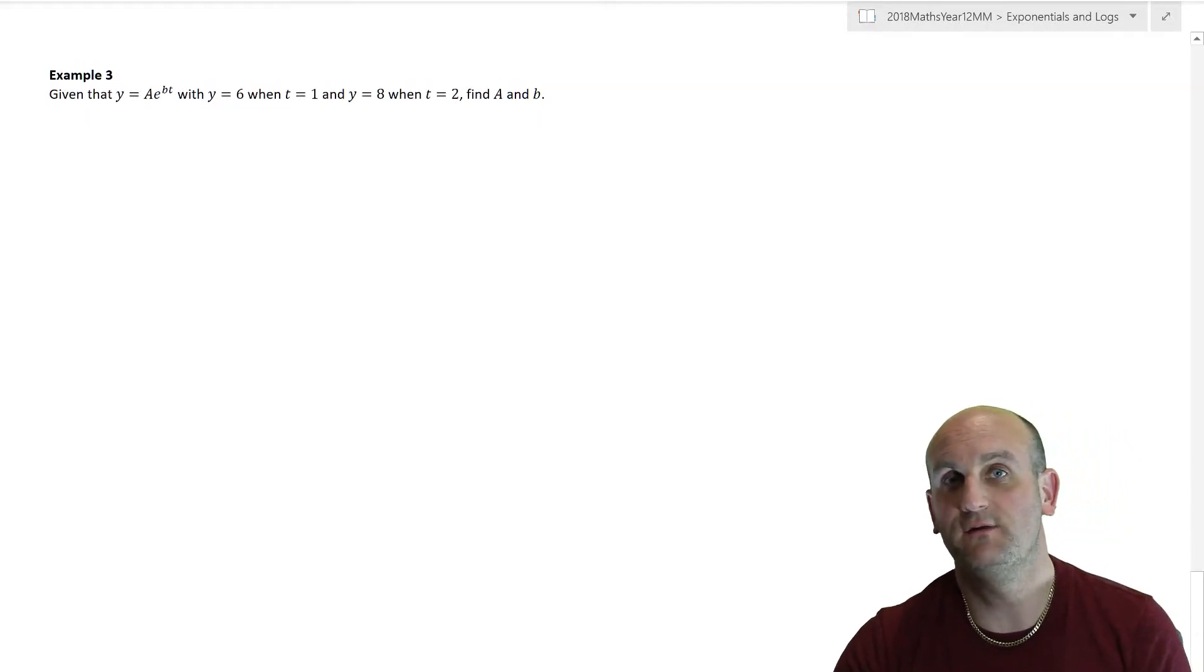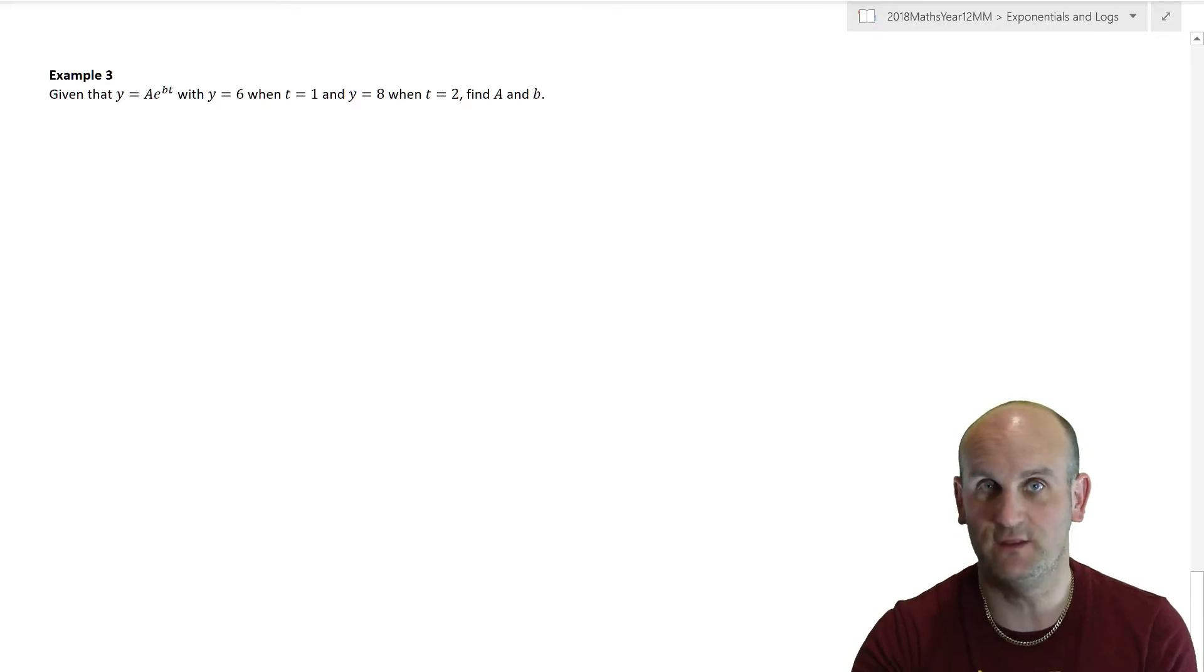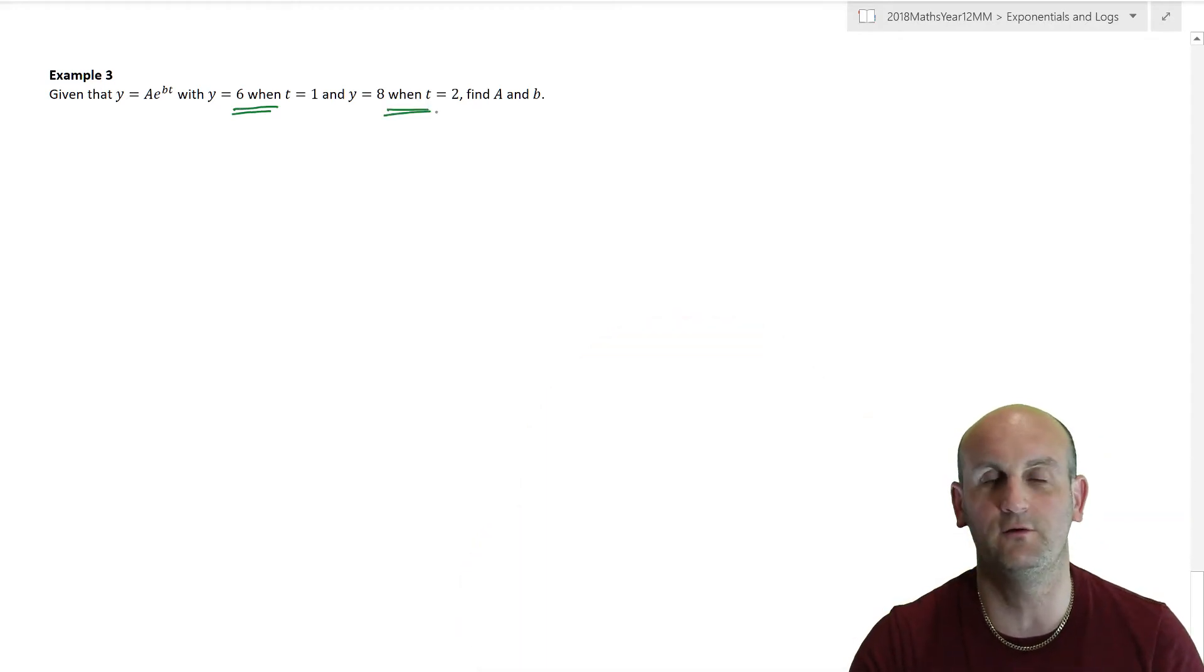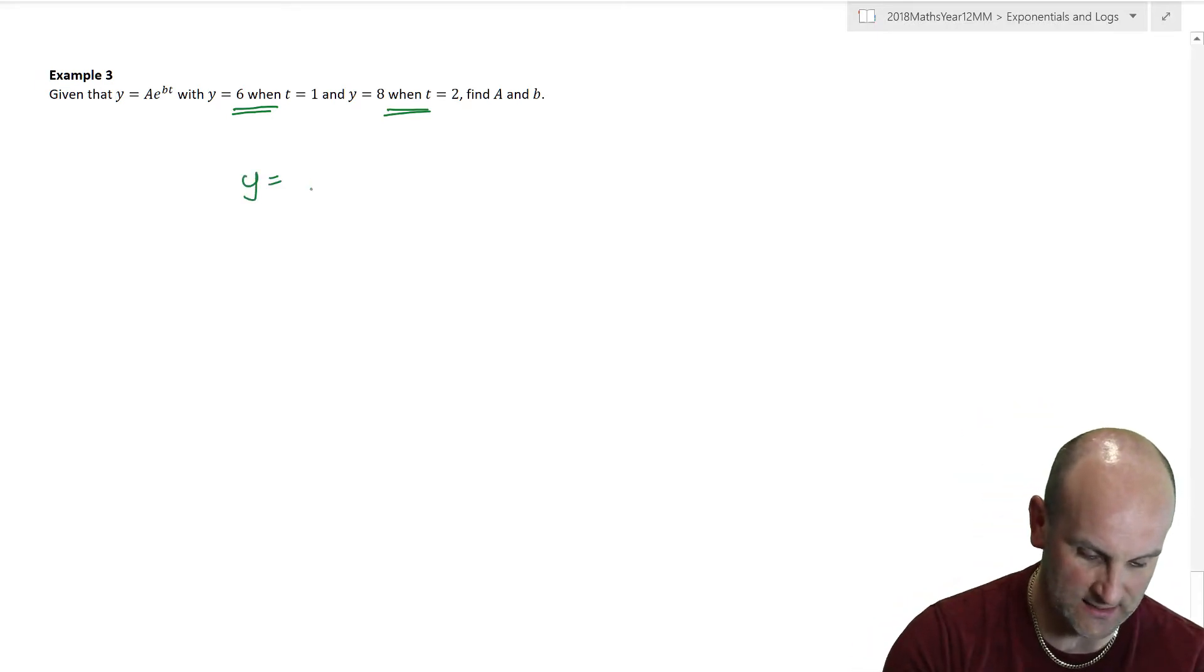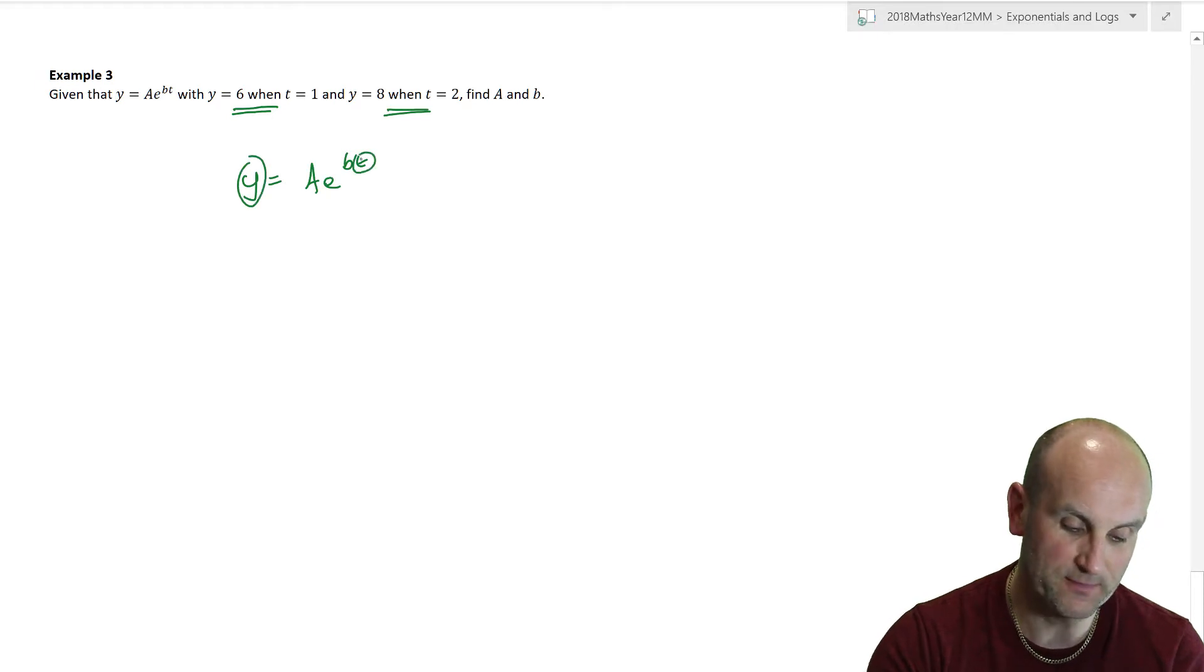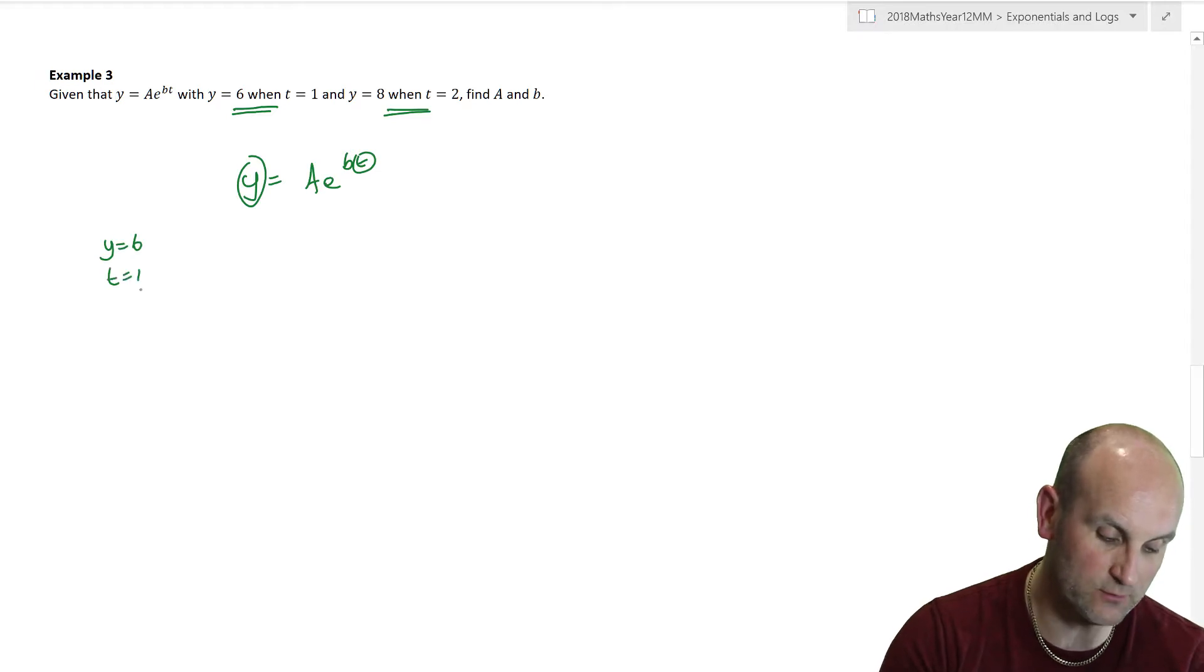And we've got one more example to do before we can call this video a day. Do you notice they've not given me a graph here? No, of course they haven't, because they don't have to. It's nice if they do, so long as they give me two coordinates. And what we've told me here is y equals 6 when t equals 1 and y equals 8 when t equals 2. Now you're going to say, hold on a moment, there's not a y and an x value. It doesn't have to be. Remember, all we need to do is look at my equation: y equals a, e to the b, t. How many unknowns do I have? Four. Remember, e we already know, it's Euler's number. So I have 4 unknowns, but in this situation they're giving me a y versus a t.